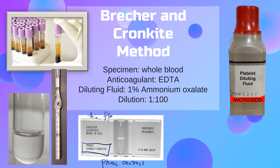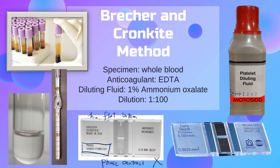In cases where a phase contrast microscope is unavailable, a light microscope may also be used, though counting platelets will be more difficult. Both hemocytometer types have the same improved Neubauer ruling in the chamber.